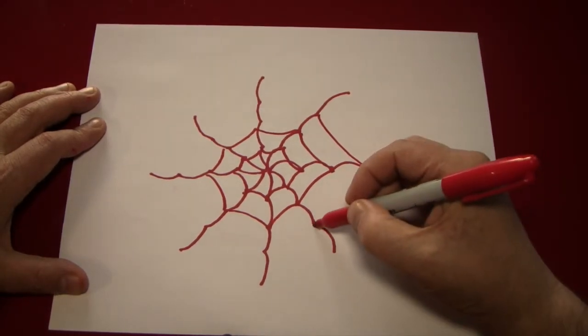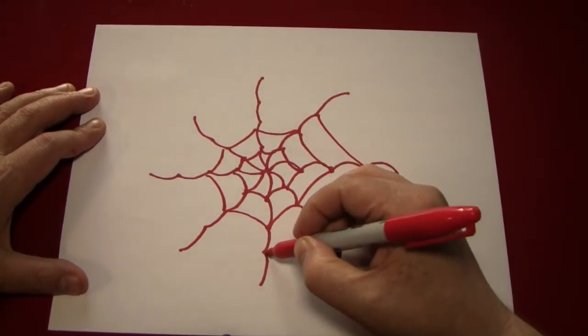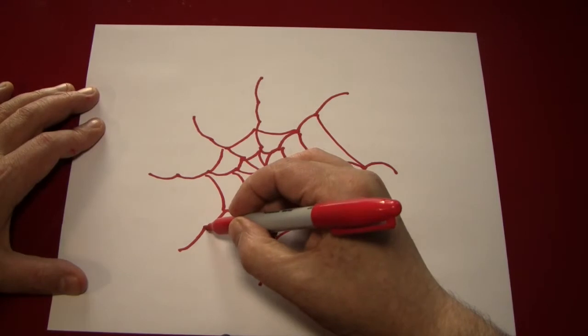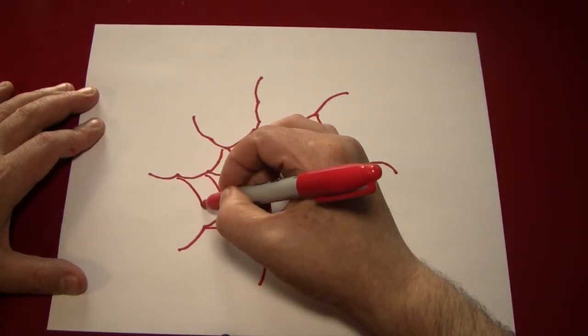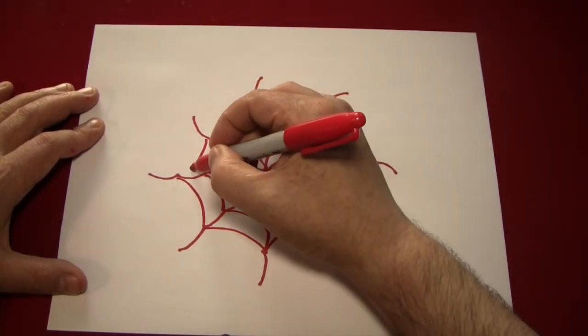Then, the next row, each time a little bit bigger, and every time these circles will bend towards the center.